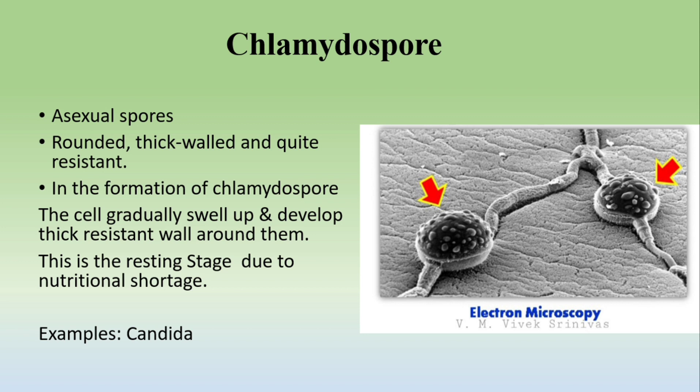Third are the chlamydospores. Chlamydospores are also asexual spores — they are rounded, thick-walled, and quite resistant spores. In their formation, the cells gradually swell up and develop a resistant thick wall around them. Chlamydospores are produced when there is nutritional deficiency, allowing the fungi to enter a resting stage. They mostly occur in Candida species.